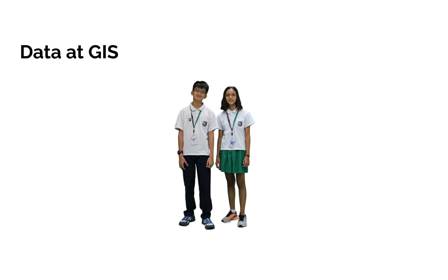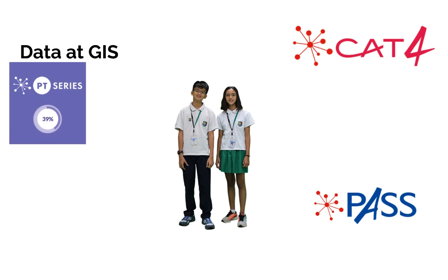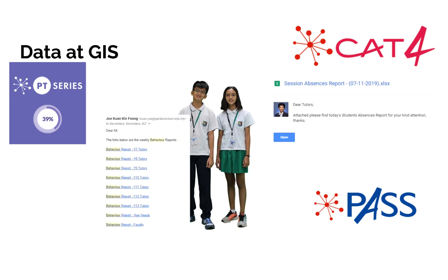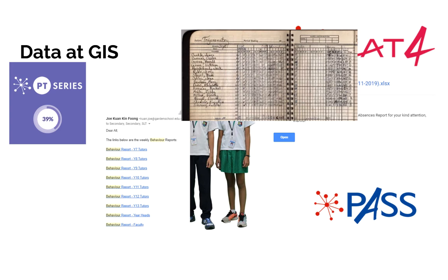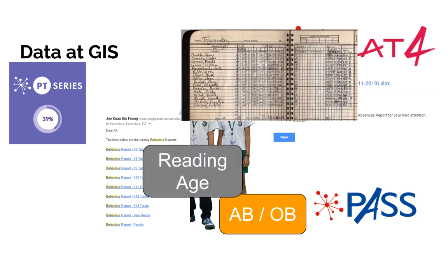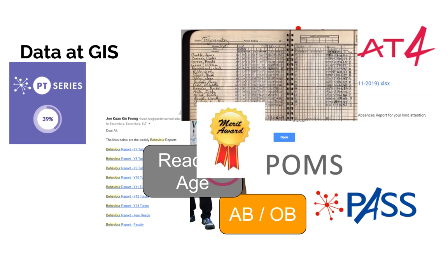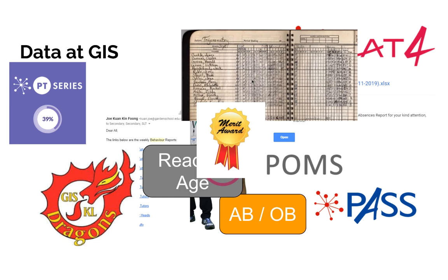Here we see two of our amazing GIS students, and at GIS we're really lucky that we have a huge range of data about these students. We have the GL series of Cat4, Pass and Progress tests. We also have our in-house attendance data, our behaviour reports, individual teacher mark sheets, and our end-of-term reporting data on attitudinal and organisational behaviours. We have the Star Reader data like the Reading Age, concerns placed onto CPOMs, merits and behaviour points, and involvement in sports activities like the Dragons.